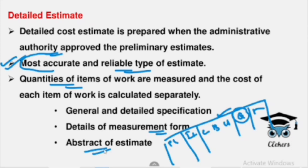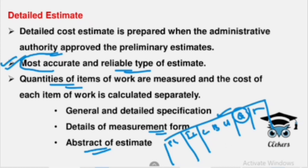Once we come to the detailed estimate, we prepare the Measurement Form for Quantity Calculation. In Quantity Calculation, if we have a quantitative tabular formula, we use units per meter cube or per unit, multiply to get the total cost, and record it in the abstract. This is the most accurate estimate.